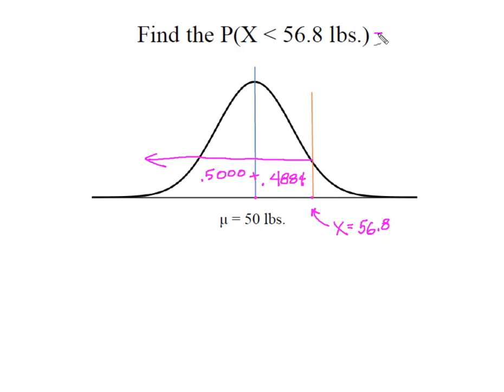And so now I know that the probability that we randomly select one of these bulldogs and it weighs less than 56.8 pounds is 98.84%.